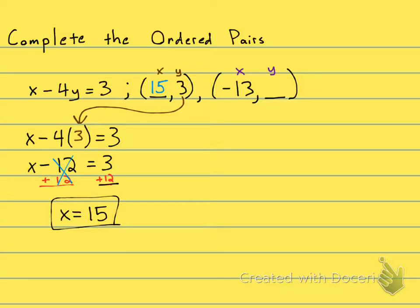All right, let's complete the ordered pair over here on the right. So my equation is X minus 4Y equals 3, and what am I going to plug in for X? Plug in negative 13. So I have negative 13 minus 4Y equals 3, and then I use my steps of solving a linear equation.